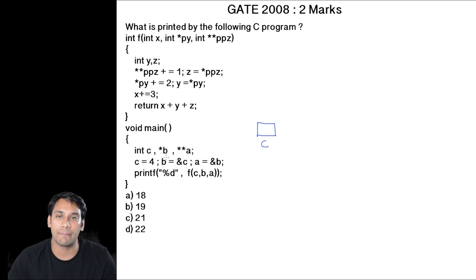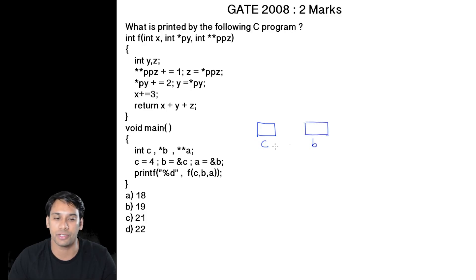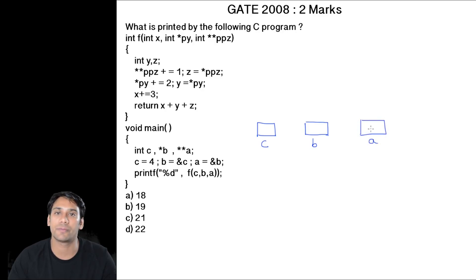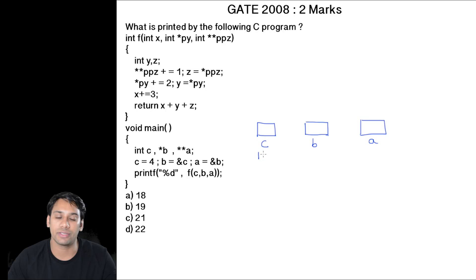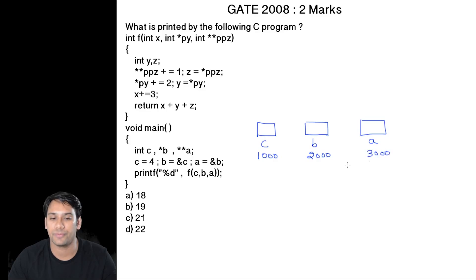Then b is a pointer which is pointing to a variable, and a is again a pointer which is pointing to a pointer, and that pointer is again pointing to a variable. Let us suppose the address of c is 1000, the address of b is 2000, and the address of a is 3000.